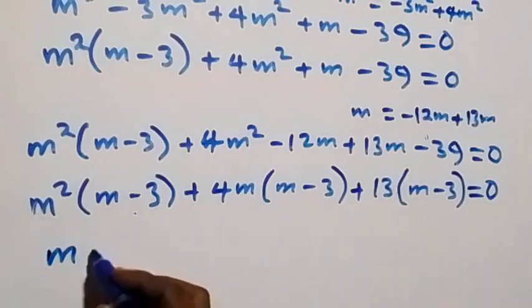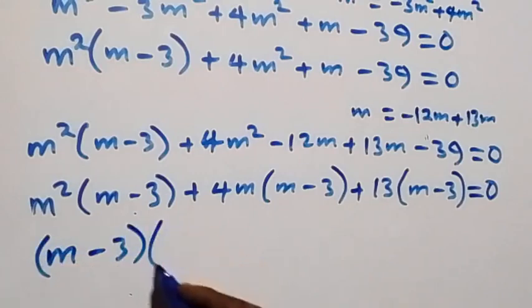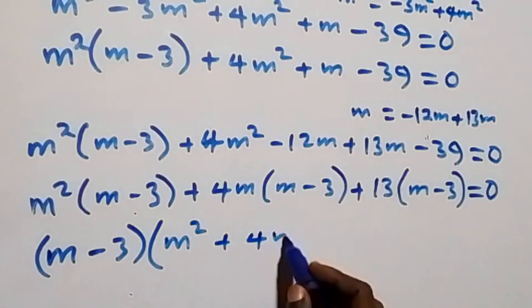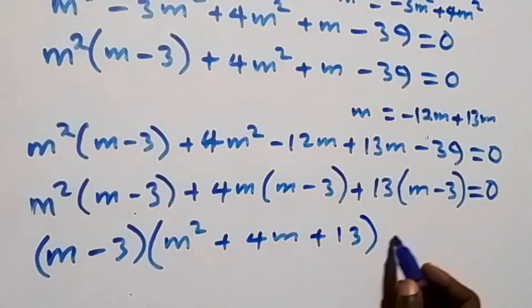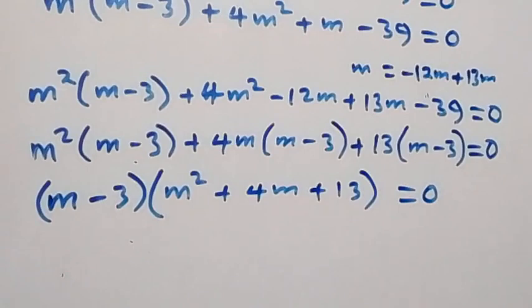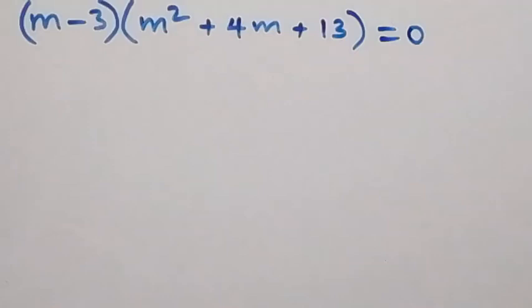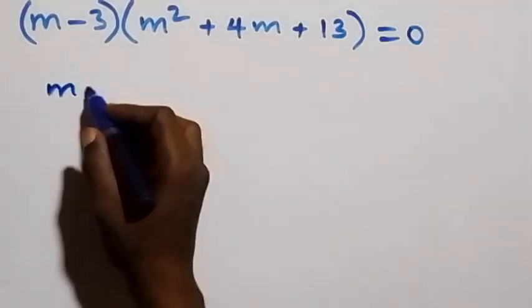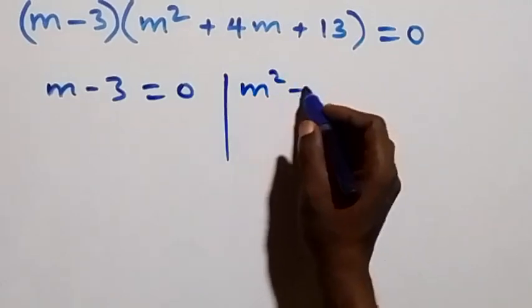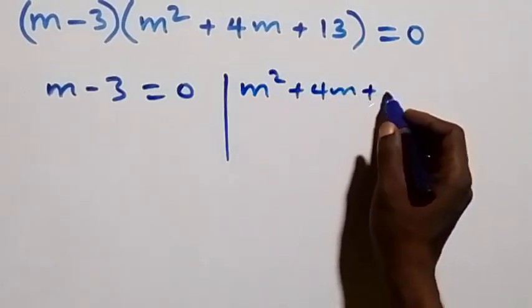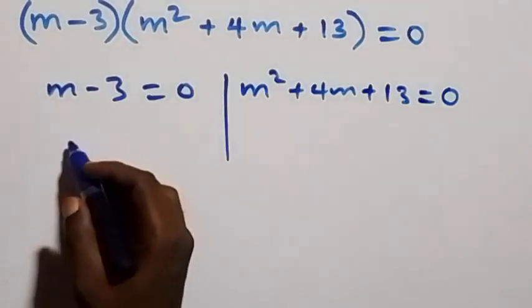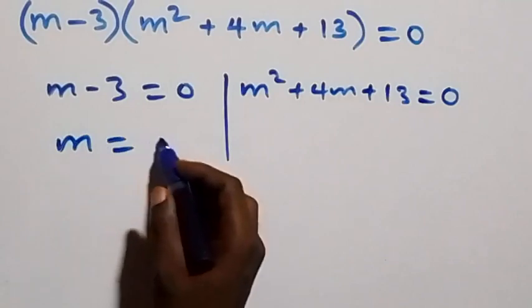We factor out m minus 3 as common, giving m minus 3 times open bracket m squared plus 4m plus 13 close bracket equals zero. This gives us two cases: m minus 3 equals zero, and m squared plus 4m plus 13 equals zero. Solving the first case gives m equals 3.